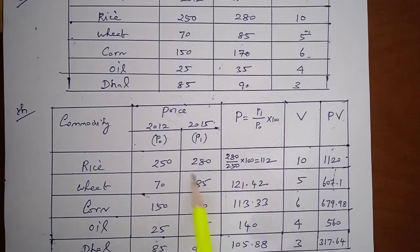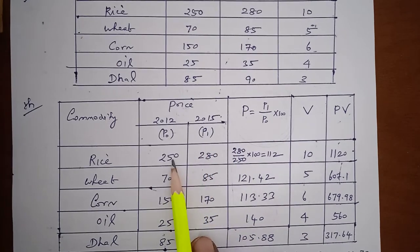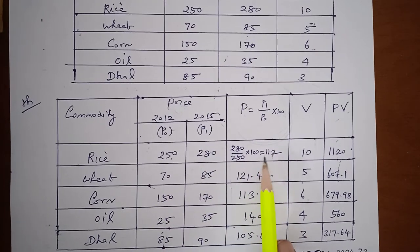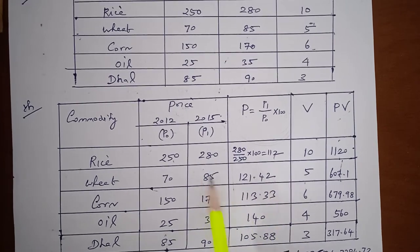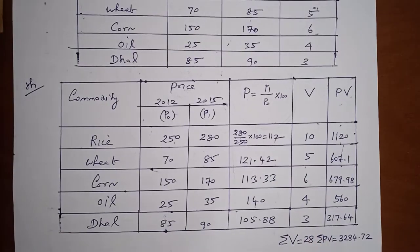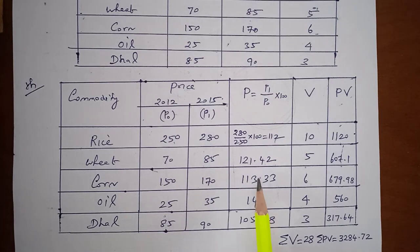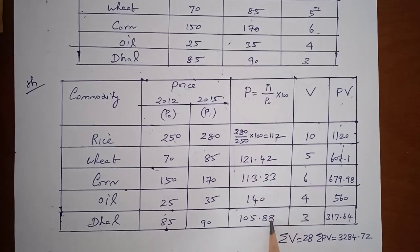Now computing capital P for each commodity using P1 by P0 into 100: for rice, 280 by 250 into 100 gives 112. Similarly, for wheat it is 121.42, calculated as 85 by 70 into 100. For corn, 170 by 150 into 100. For oil, 35 by 25 into 100. The resulting capital P values are 113.33, 140, and 105.8 respectively.